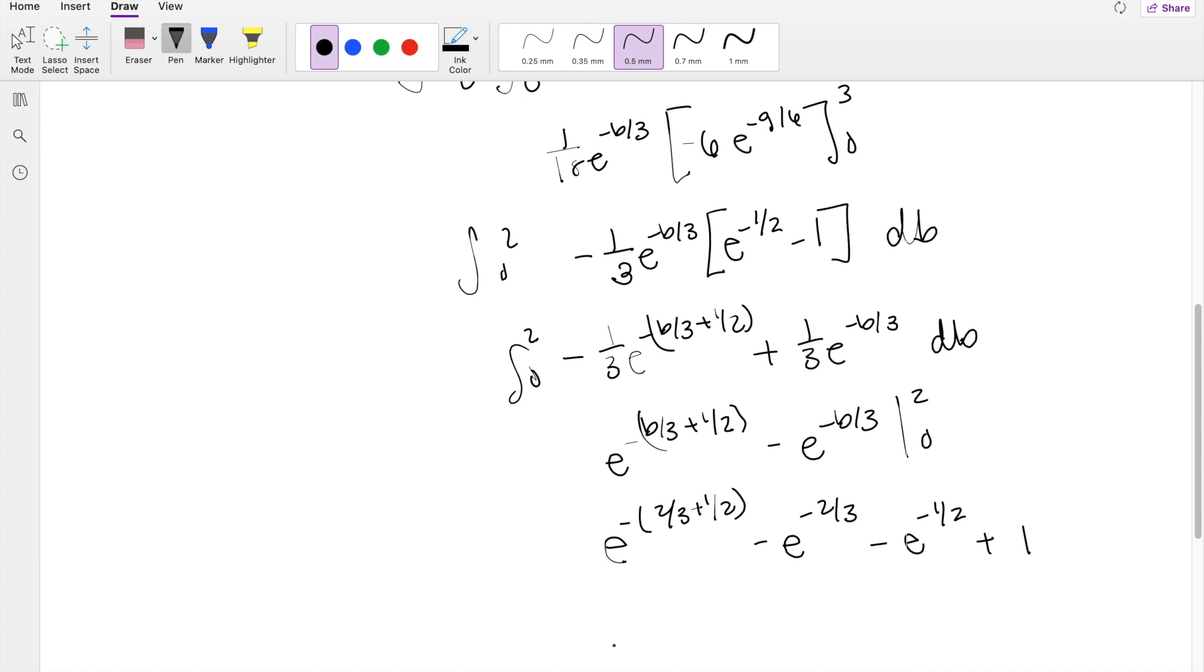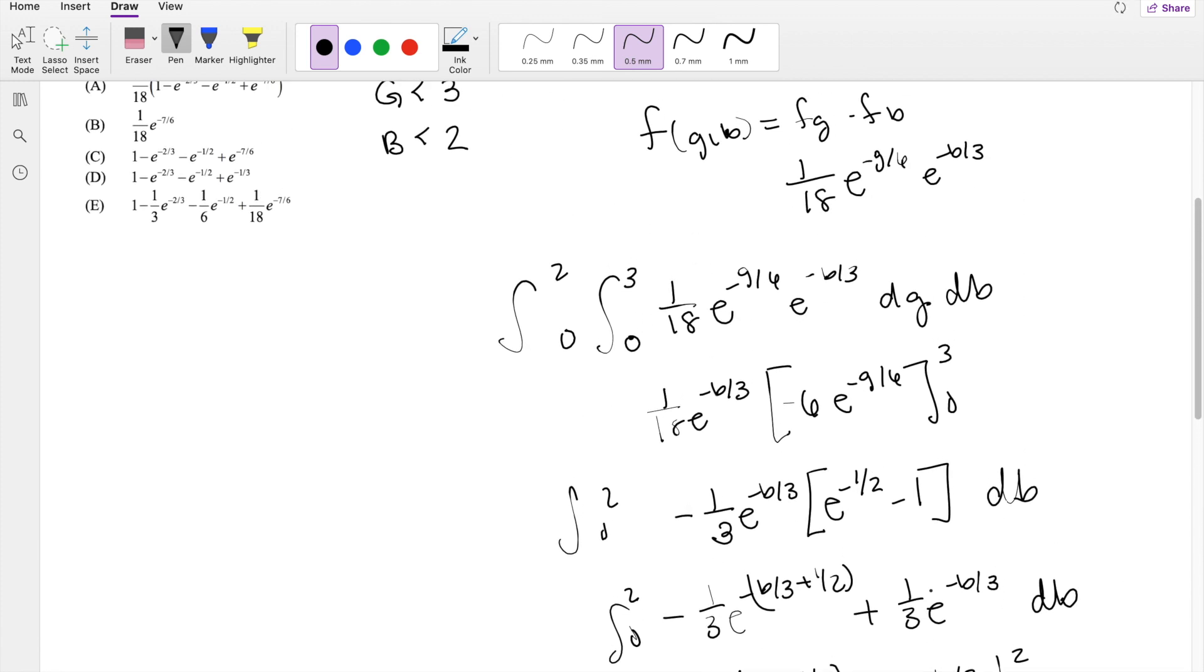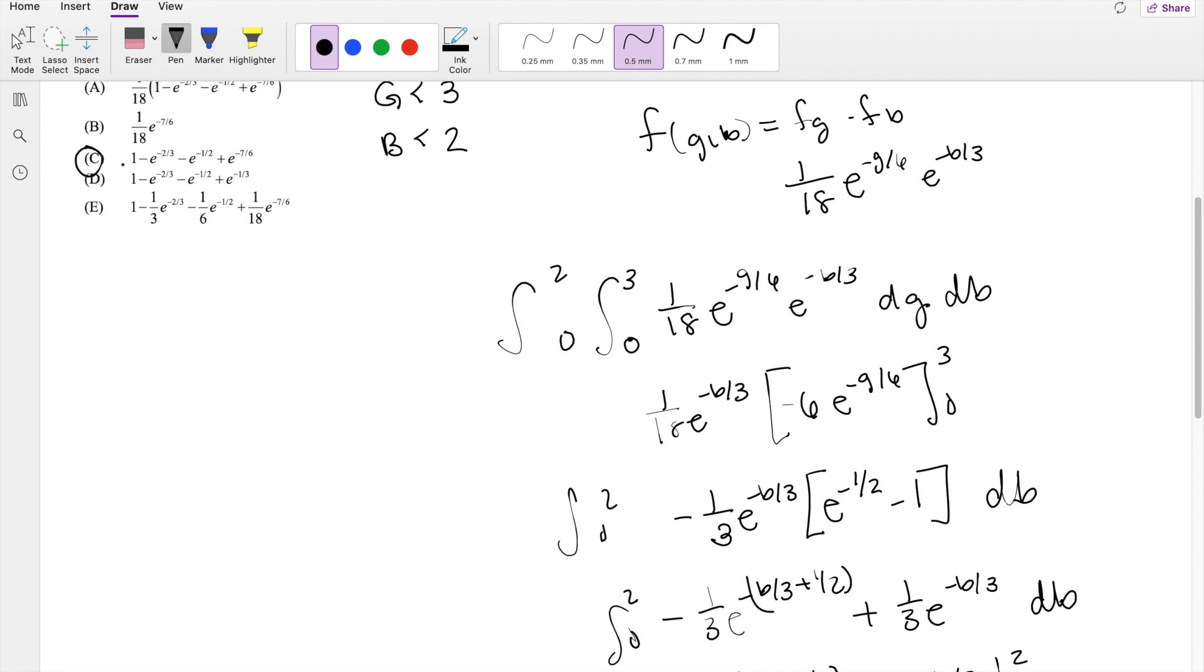Okay, we can simplify this down. So this is e to the negative 7 sixths, minus e to the negative 2 thirds, minus e to the negative 1 half, plus 1. Is that one of the choices? Oh yes it is. It is our answer, C.